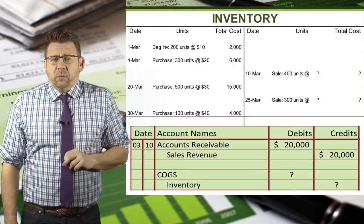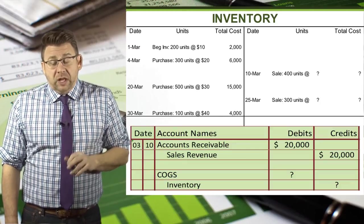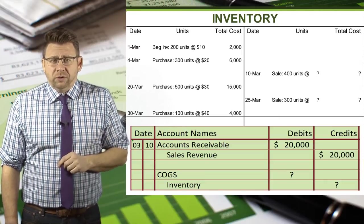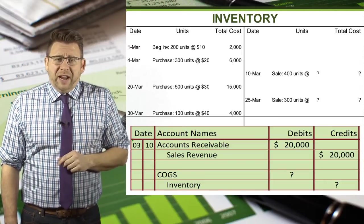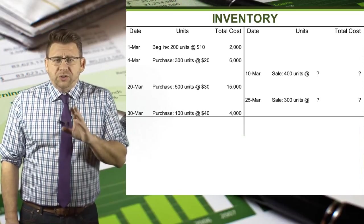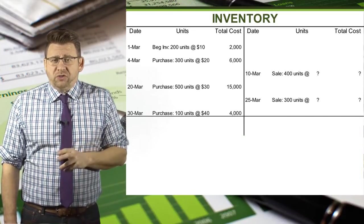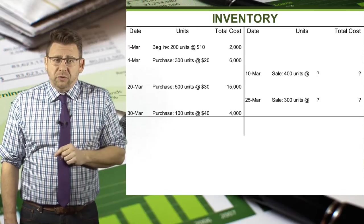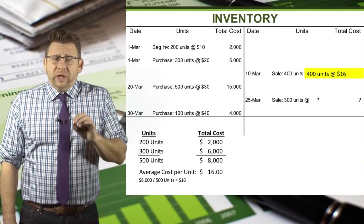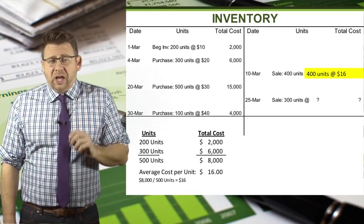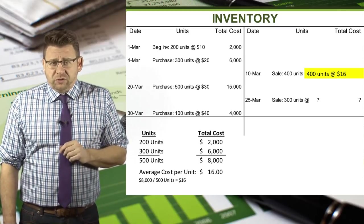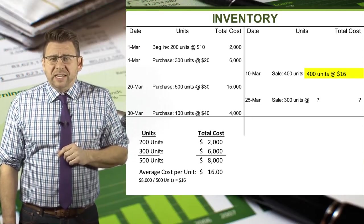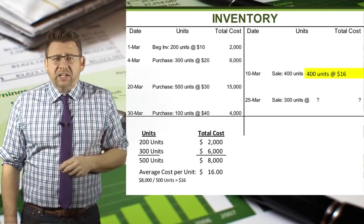We know on March 10th that we sold 400 units at $50 each, giving us sales revenue of $20,000. But how much is the cost of goods sold? Let's apply the moving average to figure this out. In order to figure out the average cost of goods sold on March 10th, we need to figure out the average cost from our beginning inventory and the purchases on March 4th. We add up the units purchased and the total cost of those purchases and divide the two to get average cost. From the slide, we get an average cost of $16 per unit.